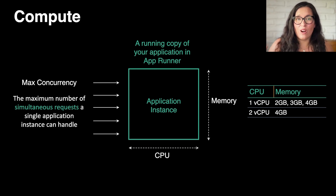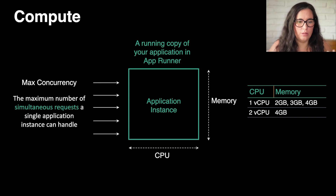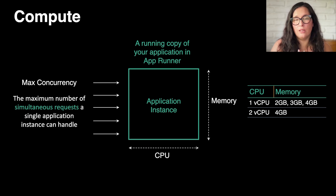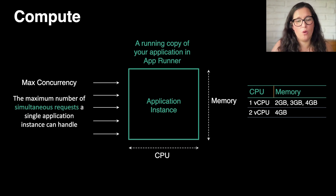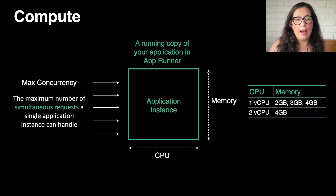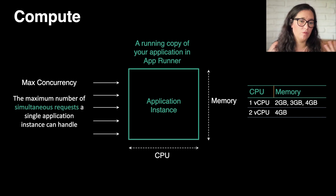When you define an AppRunner service, you need to define the compute you want. You can define how many virtual CPUs — you have one or two — and then different memory configurations. For one virtual CPU, you have two, three, or four gigabytes of memory. For a two virtual CPU setup, you have four gigabytes of memory. These configurations define the size of the instance, and you can have from one instance to as many as you need.